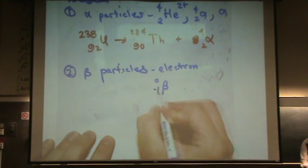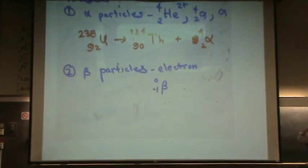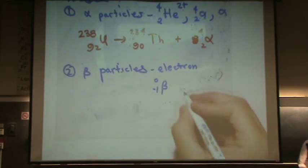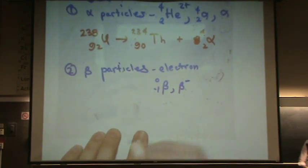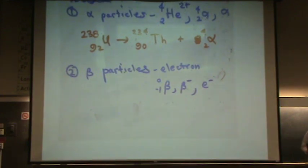And to represent that, we put a minus one here. Just to show like, it's kind of the opposite of a proton, if you will. This can also be written as a beta minus. And sometimes you'll see it written as like an electron or something like that.